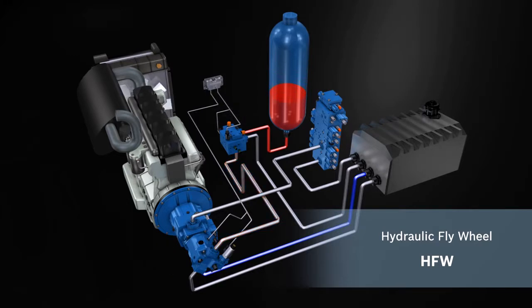Under power, the pressurized accumulator is emptied. The oil flows through the axial piston unit, which is now acting as a motor, and assists the combustion engine. Hydraulic energy is converted back into kinetic energy.